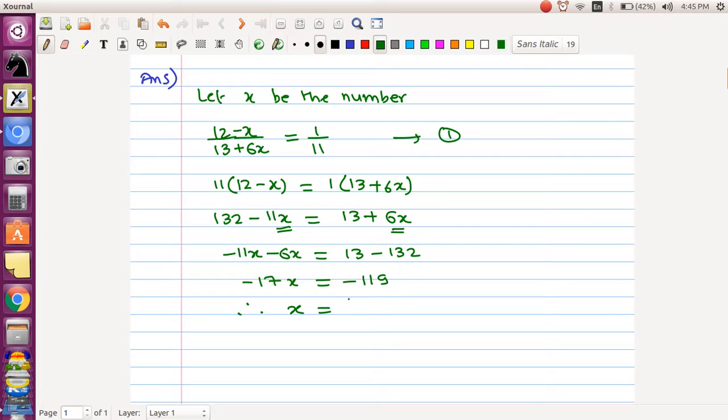So therefore x is equal to, now this negative side should get cancelled. What remains is 119/17. So this is 17×1 and 17×7, you know it. x is equal to 7.